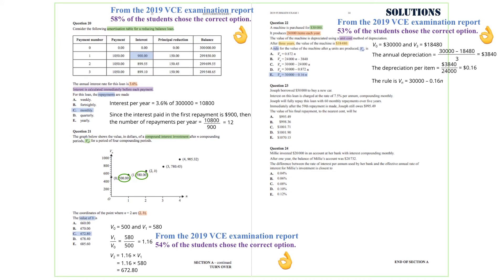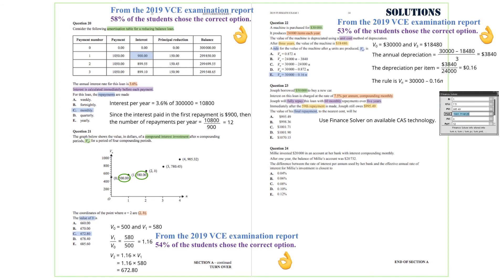Question 23. Joseph borrowed $50,000 to buy a new car. Interest on this loan is charged at the rate of 7.5% per annum compounding monthly. Joseph will fully repay this loan with 60 monthly repayments over 5 years. Immediately after the 59th repayment is made, Joseph will still owe $995.49. The question is asking for the value of his final repayment to the nearest cent. We are going to use Finance Solver on available CAS technology with N equals 1, interest rate equals 7.5, present value equals 995.49, and payment periods 12. So the last payment is going to be $1,001.71.